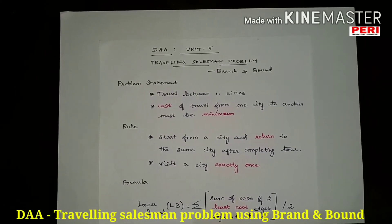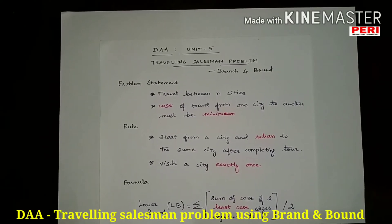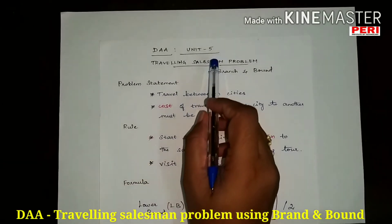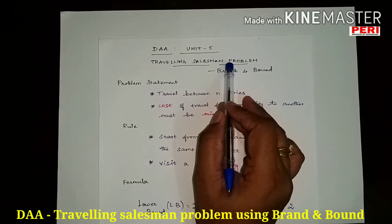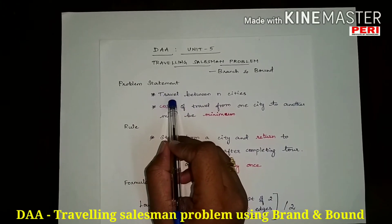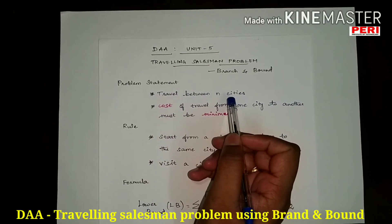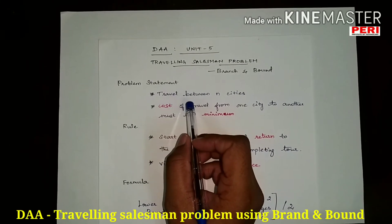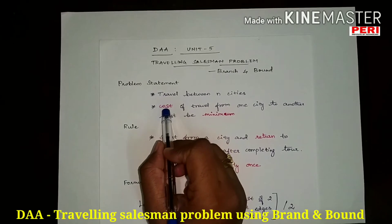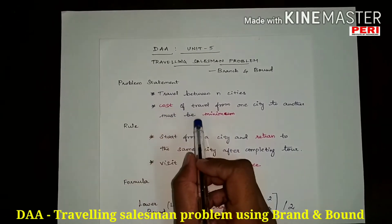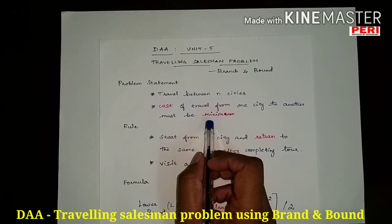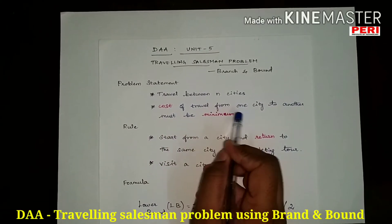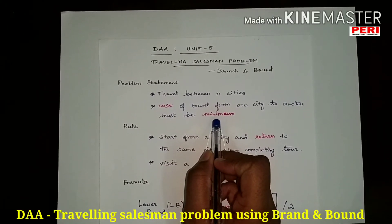Before getting into the actual problem, I want you to know about the problem statement of the Traveling Salesman Problem. From the name, you can assume a person is traveling and there is a problem in the travel. You're going to travel between N cities — for example, five cities. The main thing to remember is the cost: the cost for travel from one city to another must be minimum. That is the main problem statement.